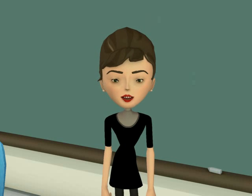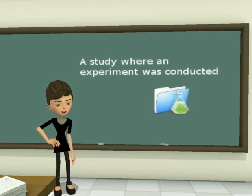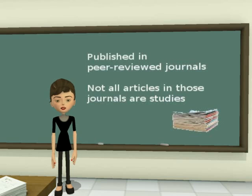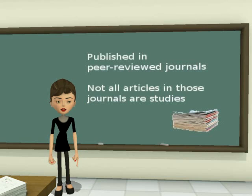Today, I'm going to help you find and identify empirical research studies. Empirical research is a study where an experiment was conducted. These studies are published in peer-reviewed journals. But be careful — not all articles in these journals are studies.